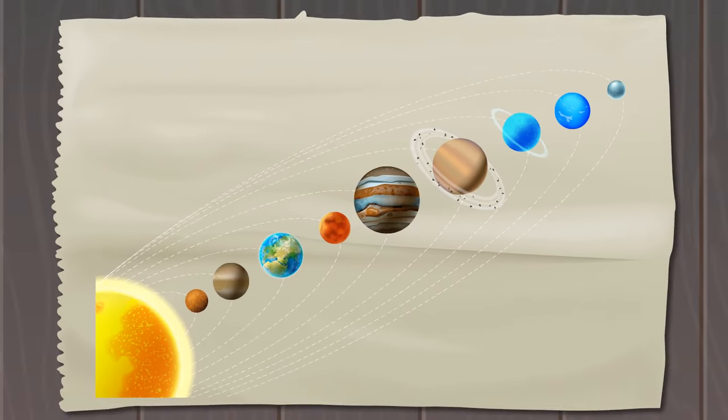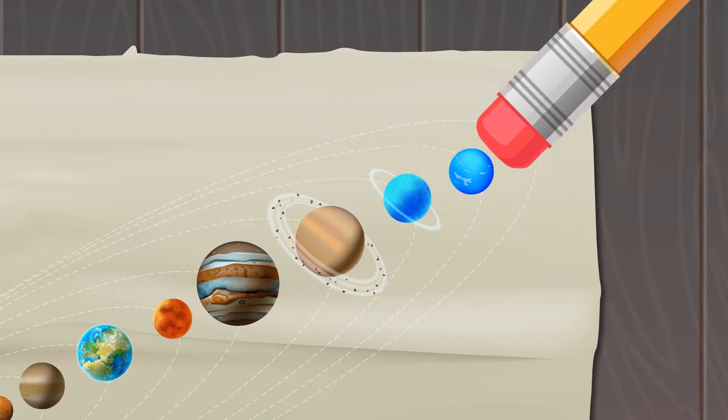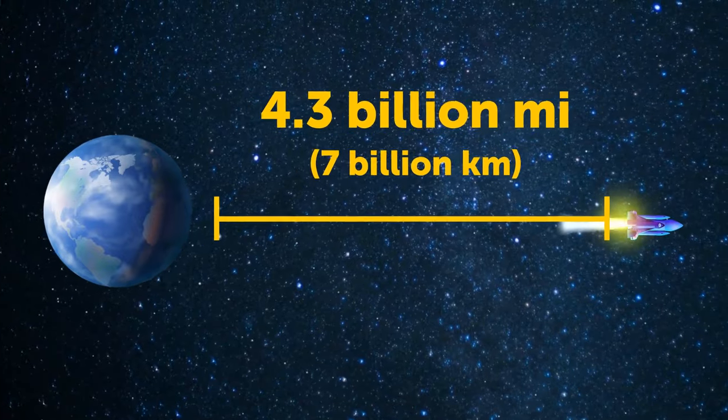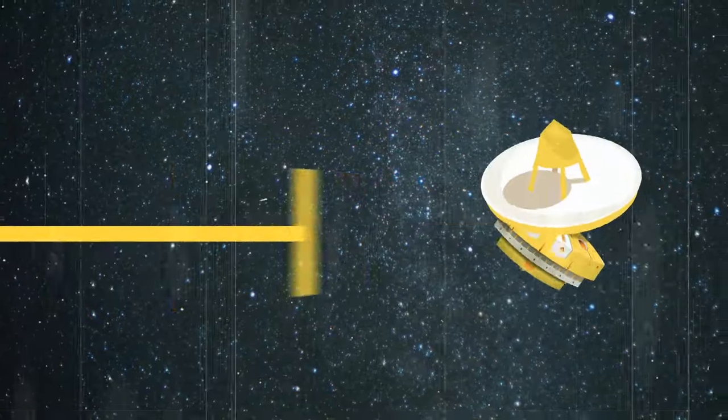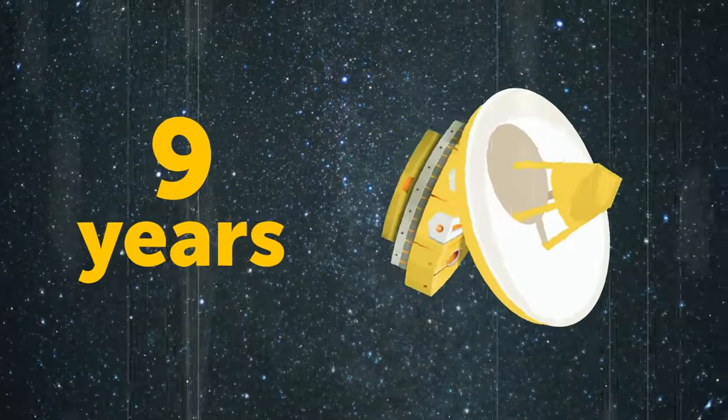And at the very edge of the solar system, we see Pluto. It was once considered a full-fledged planet, but now it's not even on the list. After that, we're 4.3 billion miles away from our home. It took the New Horizons space probe about nine years to get here.